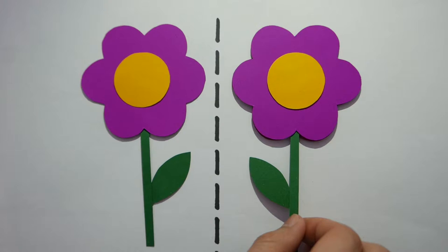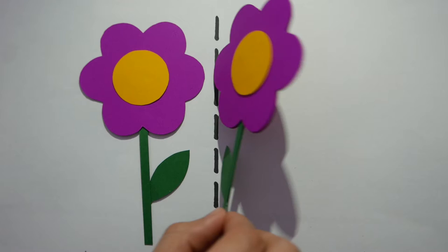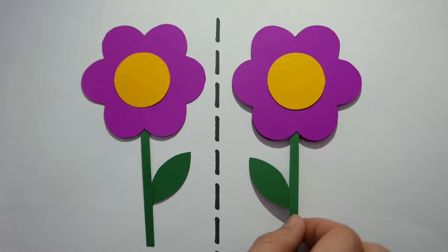A flip is when a shape or object is turned over so it faces the opposite direction. Imagine you are holding a mirror at the line of symmetry and the image you are seeing in the mirror is the flip side.